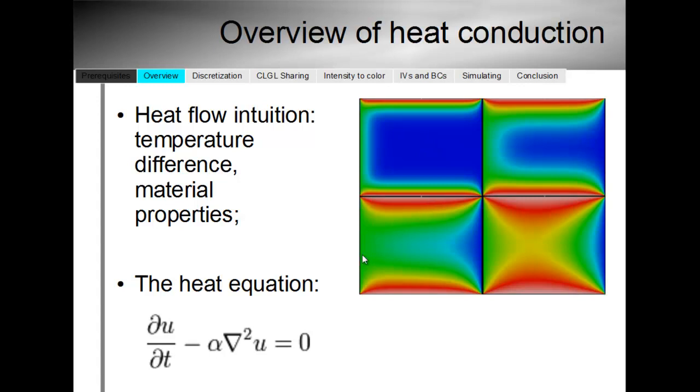And so we have the heat equation, which is the mathematical formalization of this intuition. This says that the rate of change of temperature in a given point is proportional to the conductivity of the material and also to the Laplacian of the temperature. We are not going to go into many mathematical details. But believe me, this captures the intuition that there is a dependency on the properties of the material in this alpha parameter here. And also, it depends on the temperature difference, which is captured by this Laplacian factor.